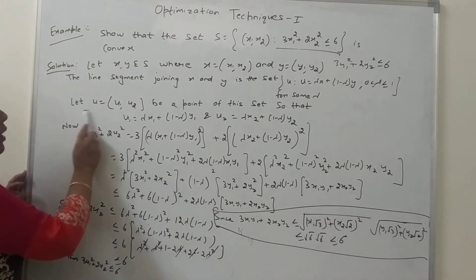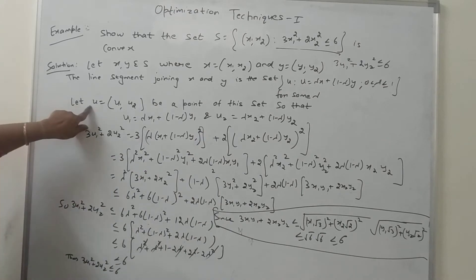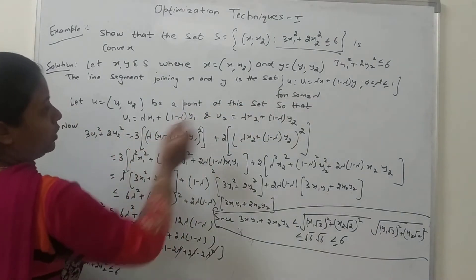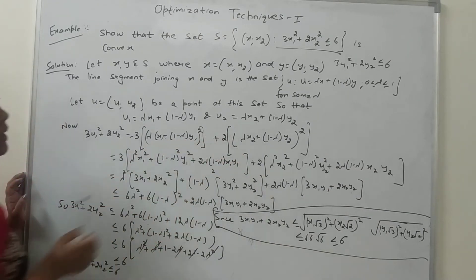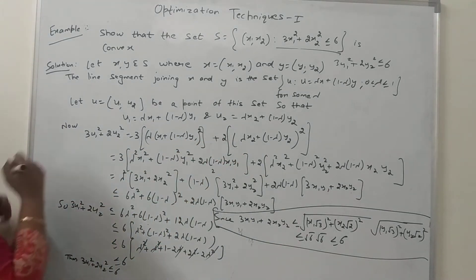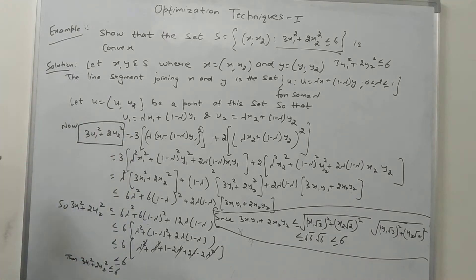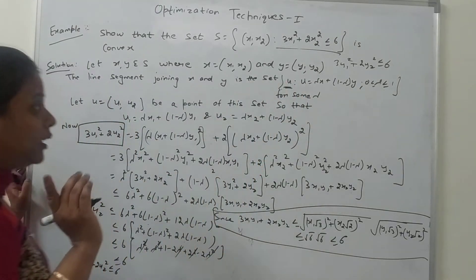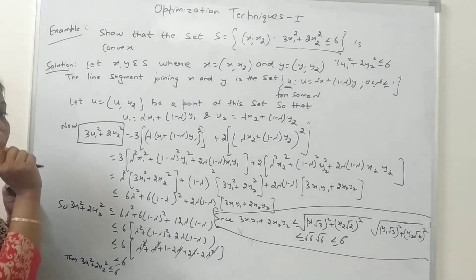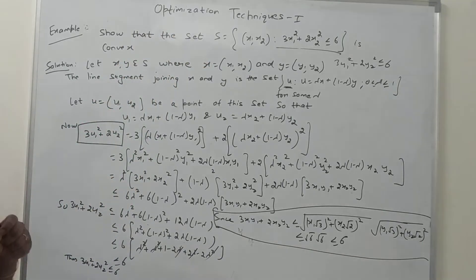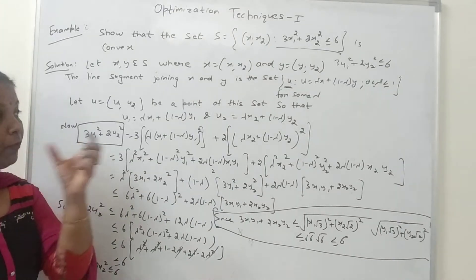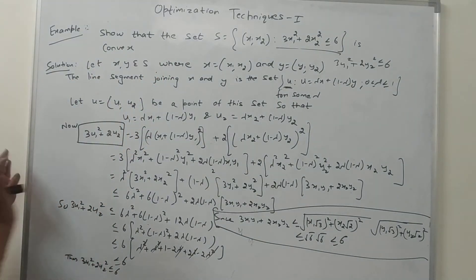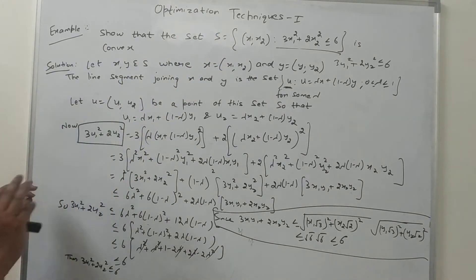We have to show that U also belongs to set S. U is a point (U1, U2) on the line segment joining X and Y, and U1 = λX1 + (1−λ)Y1 and U2 = λX2 + (1−λ)Y2. So to prove U ∈ S, I need to verify that U satisfies the condition 3U1² + 2U2² ≤ 6.